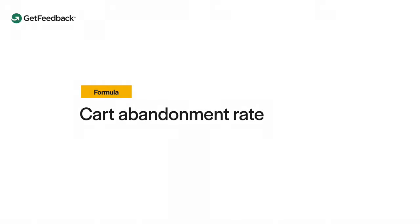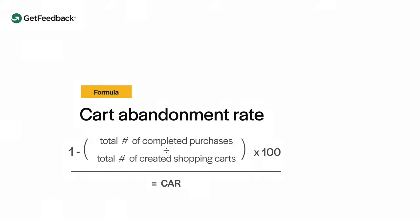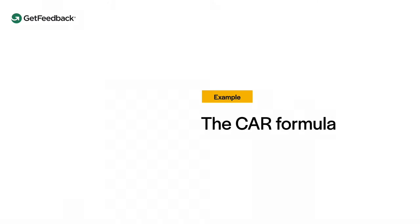To calculate your CAR, divide the total number of completed purchases by the total number of created shopping carts. Subtract the result from one and then multiply by 100 to get the percentage. For example, if there are 70 complete purchases and 400 shopping carts created total, the cart abandonment rate would equal 82.5.